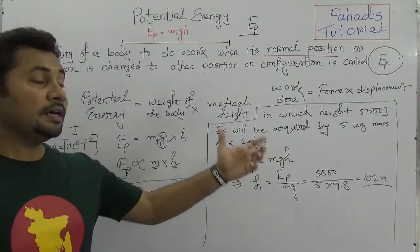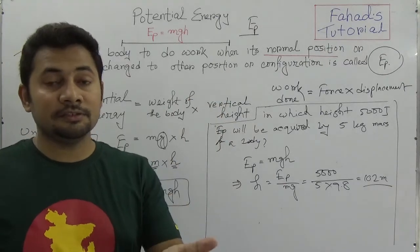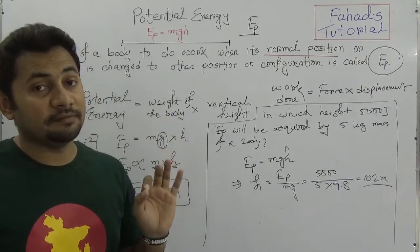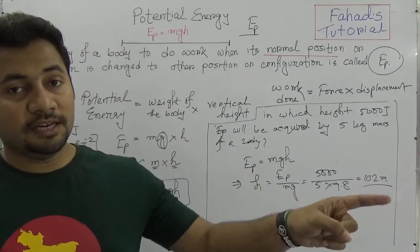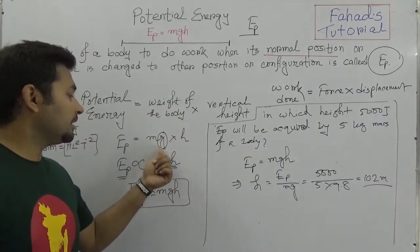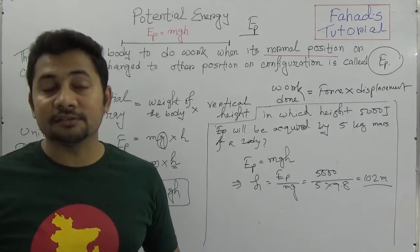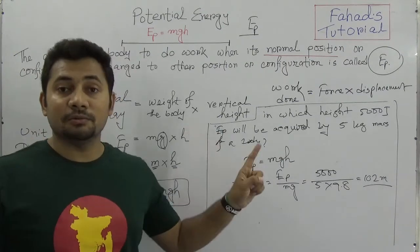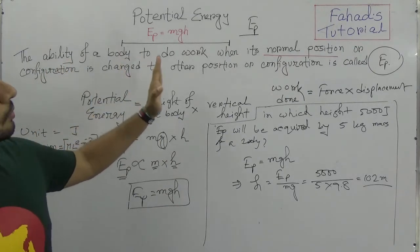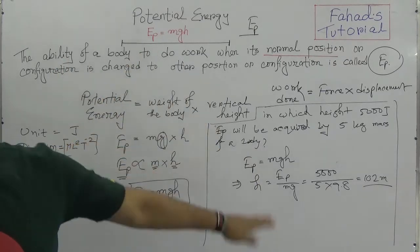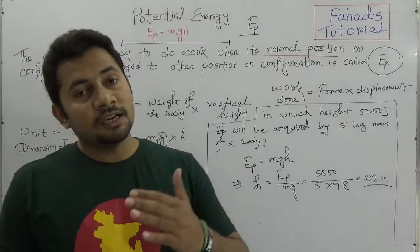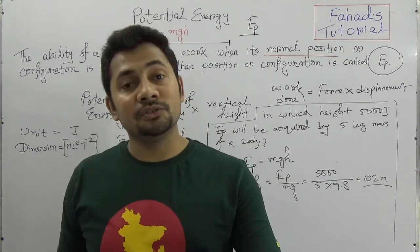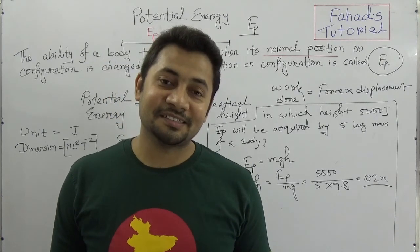These are very normal questions, and I will also solve critical questions from test papers. The concept of potential energy is very important — EP = mgh — because for vertical height we consider acceleration due to gravity, and weight is mass times gravity. The definition: the ability of the body to do work when its normal positions or configurations are changed. In the next class I shall explain kinetic energy: EK = ½mv². Take care, see you in the next class, stay well, bye.